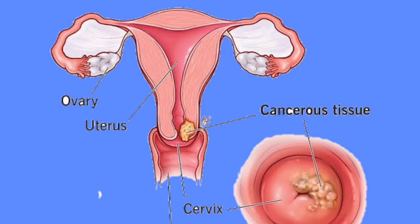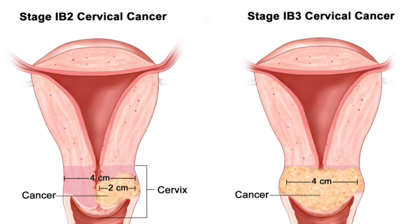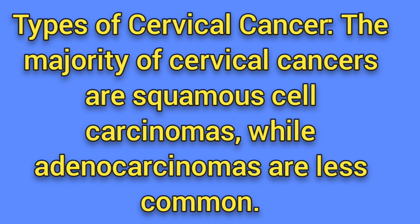Understanding Cervical Cancer — Definition and Basics. Cervical cancer develops in the cells lining the cervix, the lower part of the uterus. Regarding types of cervical cancer, the majority of cervical cancers are squamous cell carcinomas, while adenocarcinomas are less common.